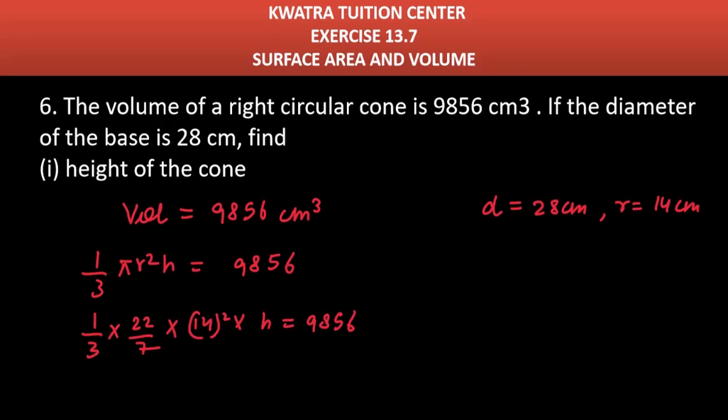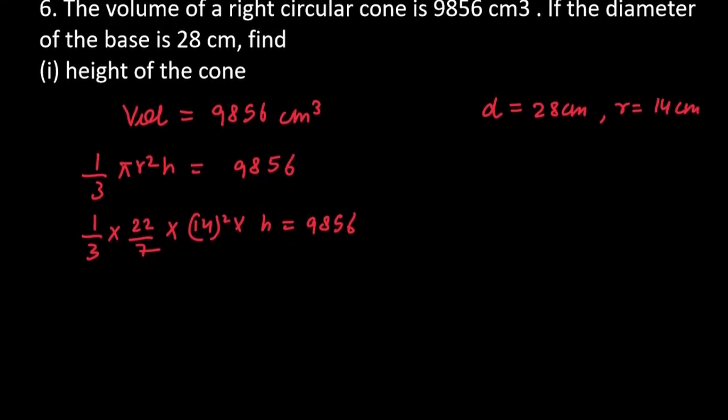Now, do cross multiplication and you will get h. The value of h is equal to 9,856 × 21 divided by 22 × 14 × 14. Values can cancel also.